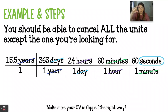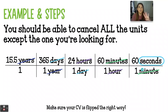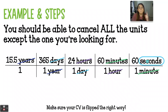All of these values, if you look just top and bottom, are equivalent. 15.5 years over one was the given information. 365 days is equivalent to one year. 24 hours is equivalent to one day. 60 minutes is equivalent to one hour. And 60 seconds is equivalent to one minute. We have used four conversion factors to convert 15.5 years into seconds. Years cancels with years, days cancels with days, hours cancels with hours, and minutes cancels with minutes — but seconds does not get cancelled because that's the unit we want to keep. That's how we know we've made it to the end.